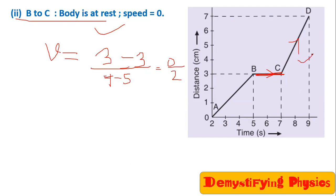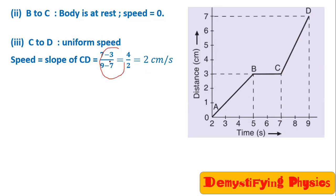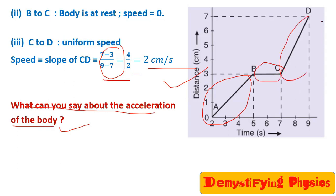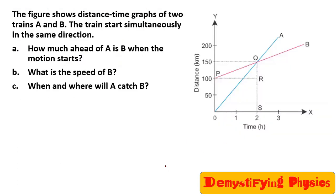Next is C to D. C to D is again uniform motion. What is the speed? Distance traveled is 7 minus 3, and the time is 9 minus 7. So 4 by 2 equals 2 centimetres per second. What about acceleration? Uniform speed means zero acceleration for all segments A to B, B to C, and C to D. So acceleration is 0 throughout.